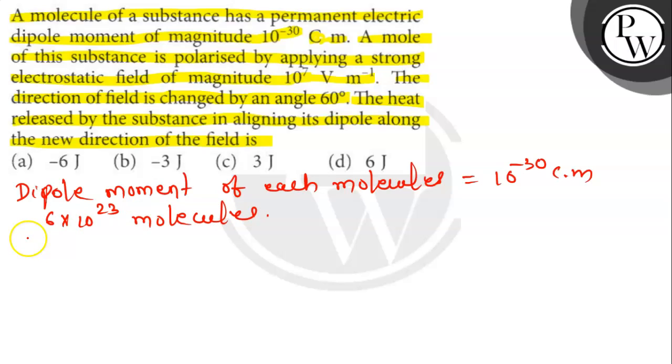total dipole moment of all the molecules P equals 6 into 10 to the power 23 into 10 to the minus 30 coulomb meter, which is 6 into 10 to the power minus 7 coulomb meter.